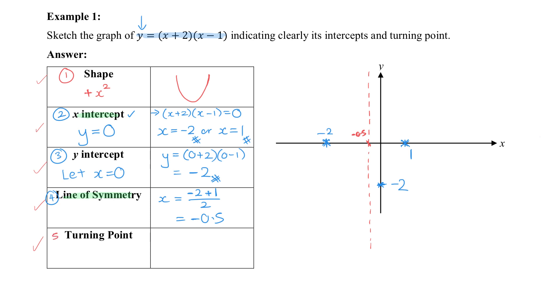And at the end of the day, how do I know the x and y coordinate of the turning point? I'm going to use the x value here, found in the line of symmetry. So I let x be negative 0.5 and put it and substitute it into the original equation. So negative 0.5 plus 2 times negative 0.5 minus 1. Evaluate it. And we will get negative 2 and 1 quarter. So therefore, the turning point is negative half, negative 0.5, and comma negative 2 and 1 quarter for y. x is this, y is this.